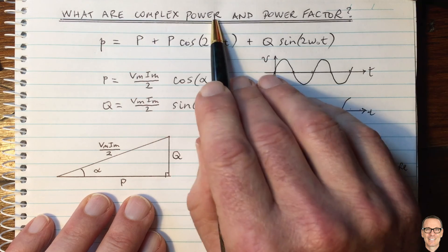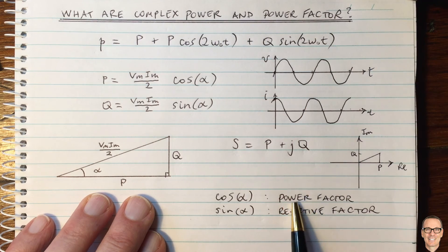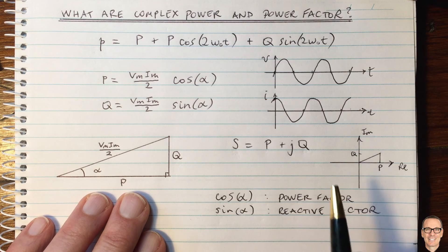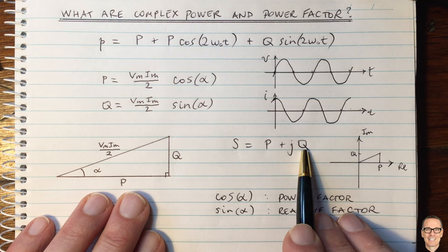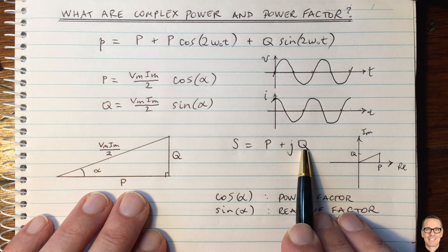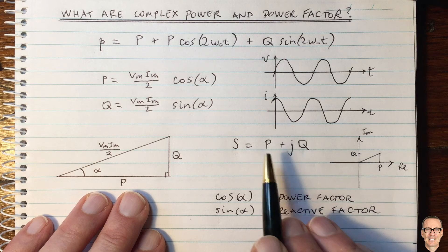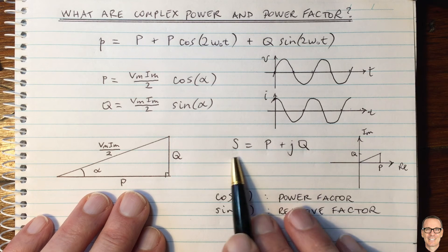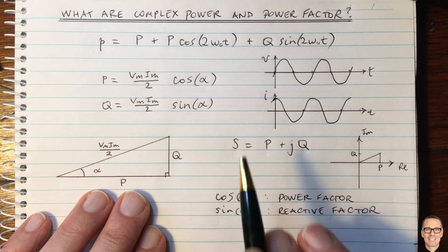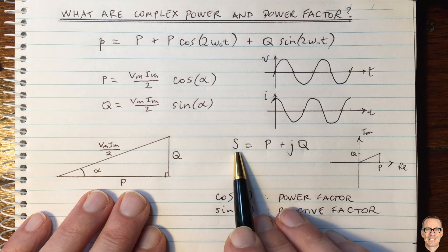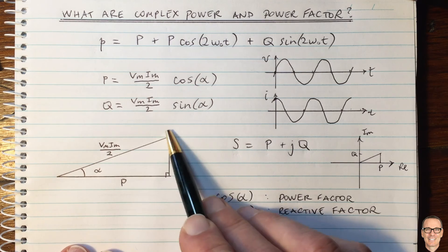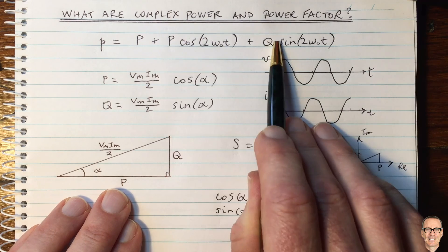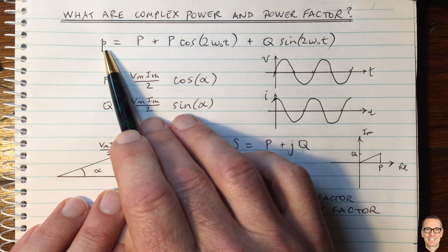So in summary, complex power and power factor are simply definitions. They make some mathematical calculations easier, but it's certainly not the case that Q is in some sense imaginary or not real and P is the only thing that's real or something like that when we start thinking about complex numbers. They are simply a convenient mathematical notation that comes about because of this triangle relationship between two components in the instantaneous power equation.